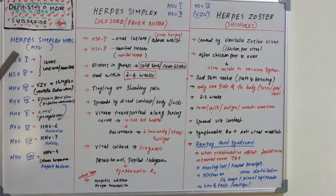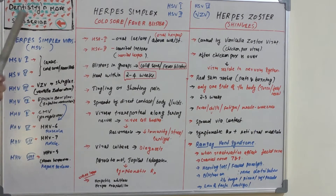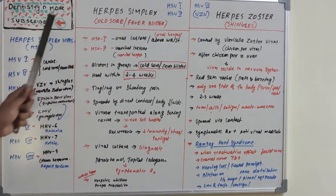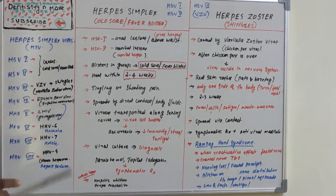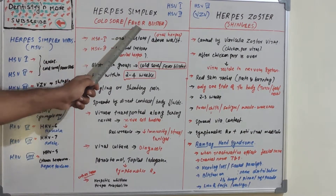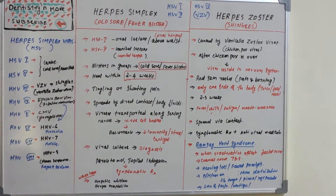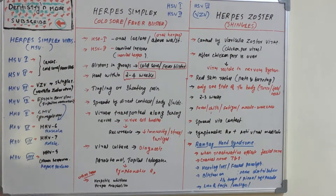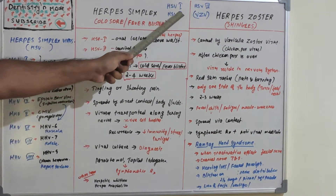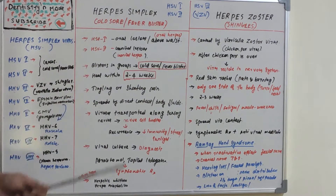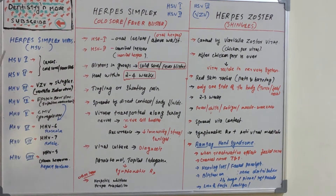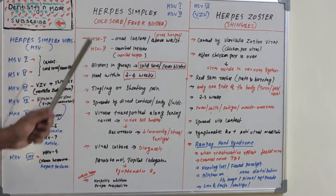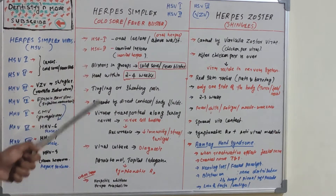These are the classifications of herpesviridae. Now moving on to herpes simplex — herpes simplex is the disease, while herpes simplex virus (HSV) is the virus. It is also known as cold sore and fever blisters, and questions may come using any of these names. It is caused by HSV1 and HSV2: HSV1 causes above-waist lesions, i.e., oral lesions (oral herpes), whereas HSV2 causes genital lesions (genital herpes).